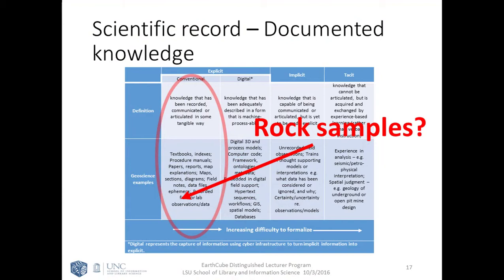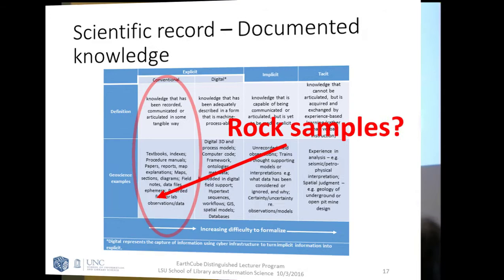I'm suggesting that rock samples fall into the explicit area, because they are tangible physical things that represent knowledge. You can go back to them and pull knowledge out using different instruments, different methods — but they do record an instance. They were specifically picked out of the field with intentional decision-making: this represents some instance, an outcrop, a geological unit, a fossil specimen representing what was found in an area at a time. There was some intentionality, and it represents the knowledge just by being there.